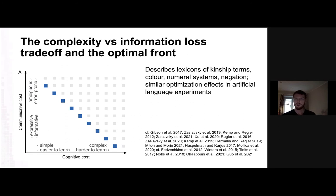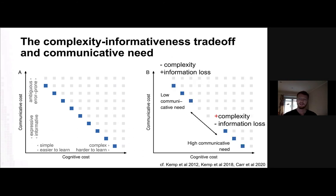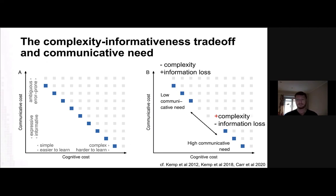But then the question is: how does a language decide where to be on the optimal front? Because there are many ways to be optimal. One idea is that it depends on communicative need. If you have low communicative need — say, kinship terms are not really important in your language community — then people are happy to have a more ambiguous but simpler language. Whereas if kinship terms are very important, languages sacrifice simplicity and become more complex, but then you're more precise and don't have information loss.